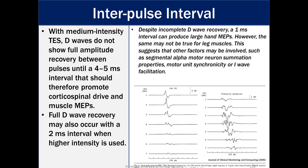Despite incomplete D-wave recovery, a one millisecond interval can produce large hand MEPs. However, the same may not be true for leg muscles. This suggests that other factors may be involved such as segmental alpha motor neuron summation properties, motor unit synchronicity, or I-wave facilitation. So on the bottom picture here on the left, we have the interpulse interval in milliseconds, and then we have the representative amplitude.